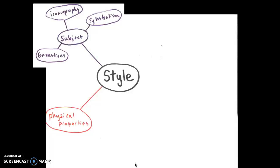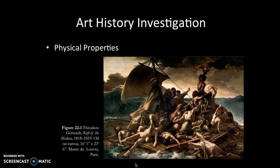Off of that central artwork or style, we might also talk about physical properties. Physical properties is deceptively simple — people tend to overlook it when talking about an artwork. Physical properties means the material of the painting, sculpture, or whatever it is. For example, this is an oil painting on canvas — that's the medium. I would understand it differently if it were a photograph or a life-size sculpture.